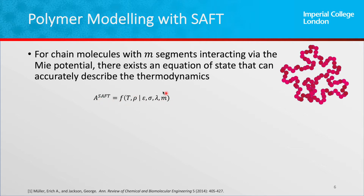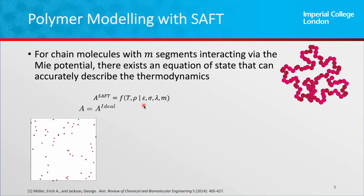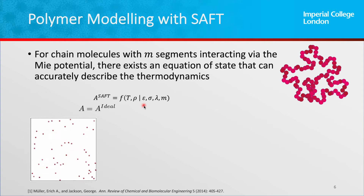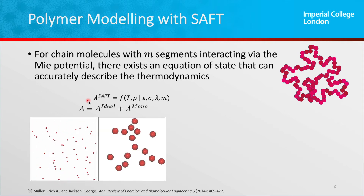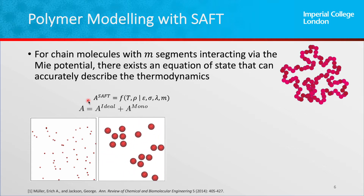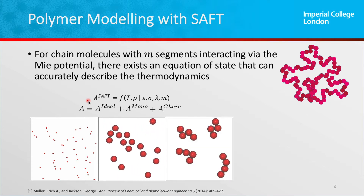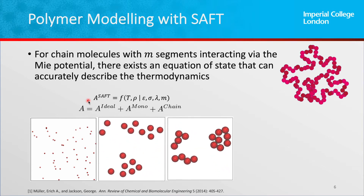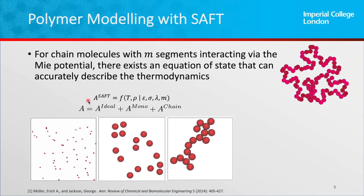With SAFT, we could directly put these parameters in — this epsilon, sigma, and lambda of the Mie potential. This equation of state is called Statistical Associating Fluid Theory, or SAFT-gamma, and it takes into account the sum of three contributions. It firstly assumes that all monomers are ideal gases, with a contribution to the Helmholtz free energy for that. Then it assumes that monomers are actually interacting with each other as Mie fluids. The final contribution is that molecules are composed of chains of these monomers.